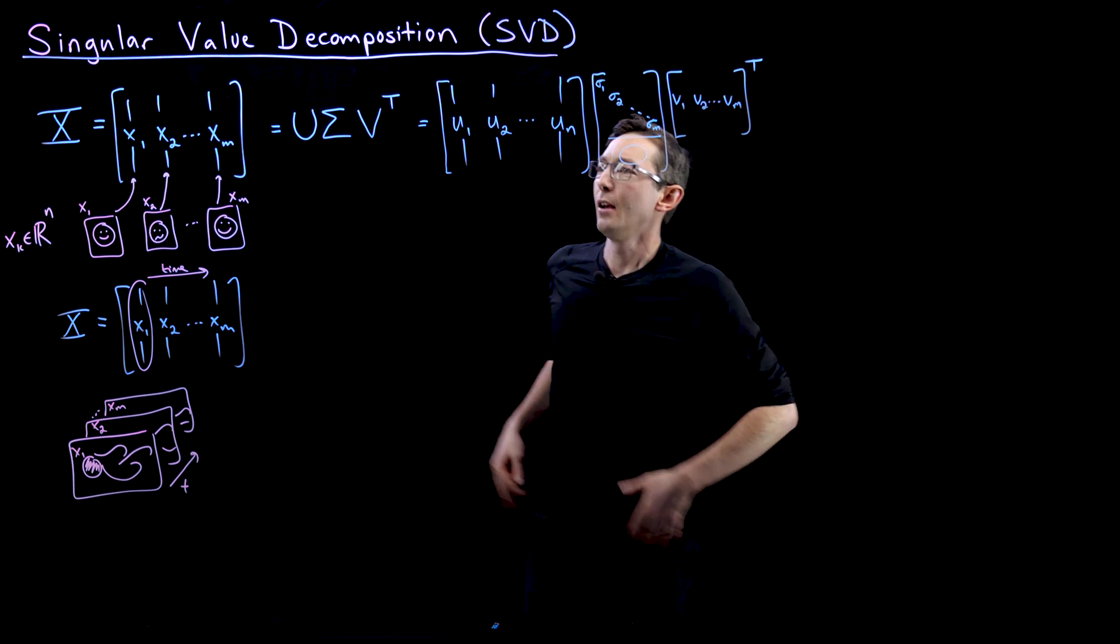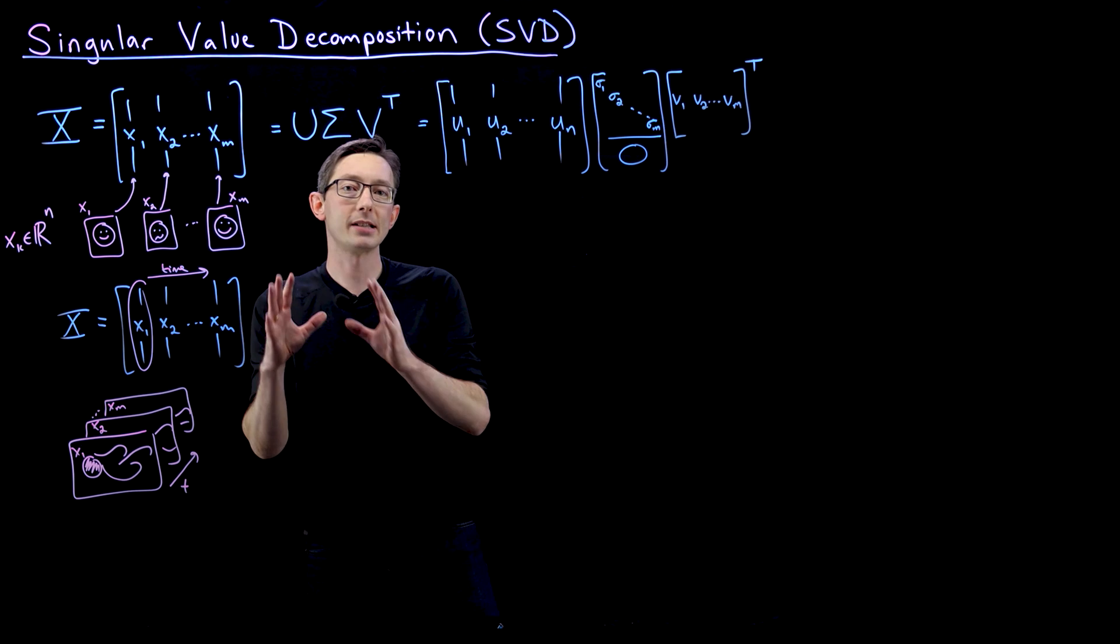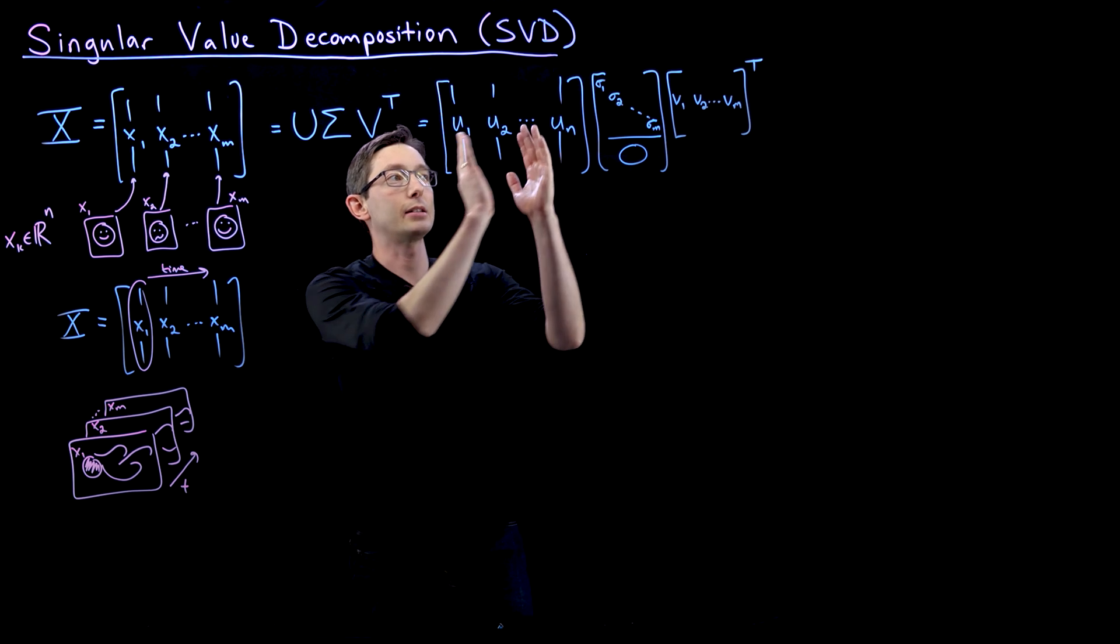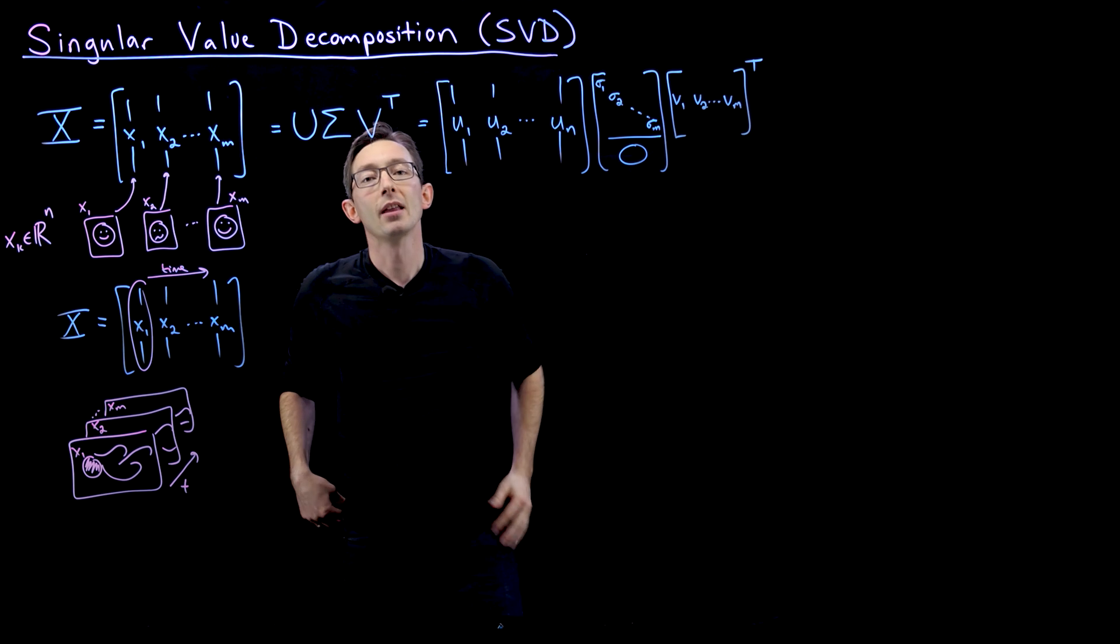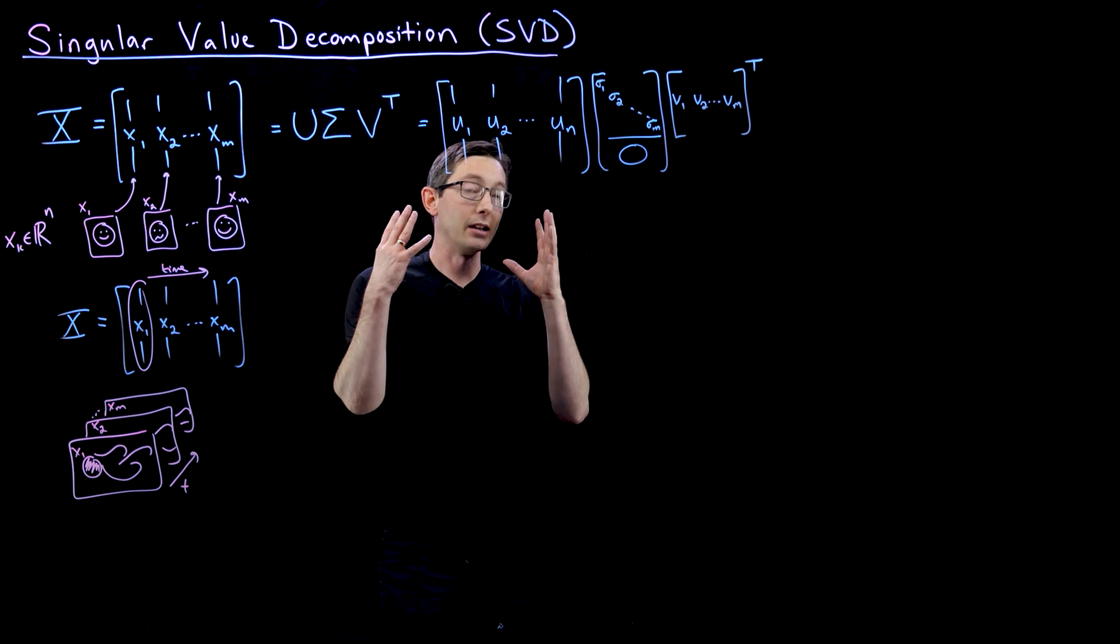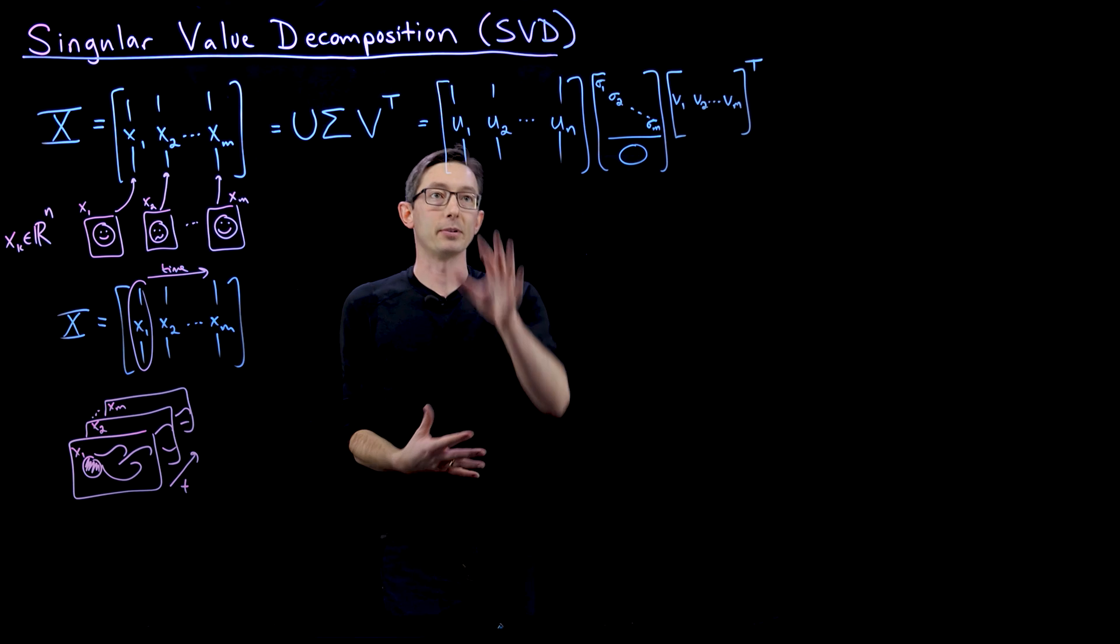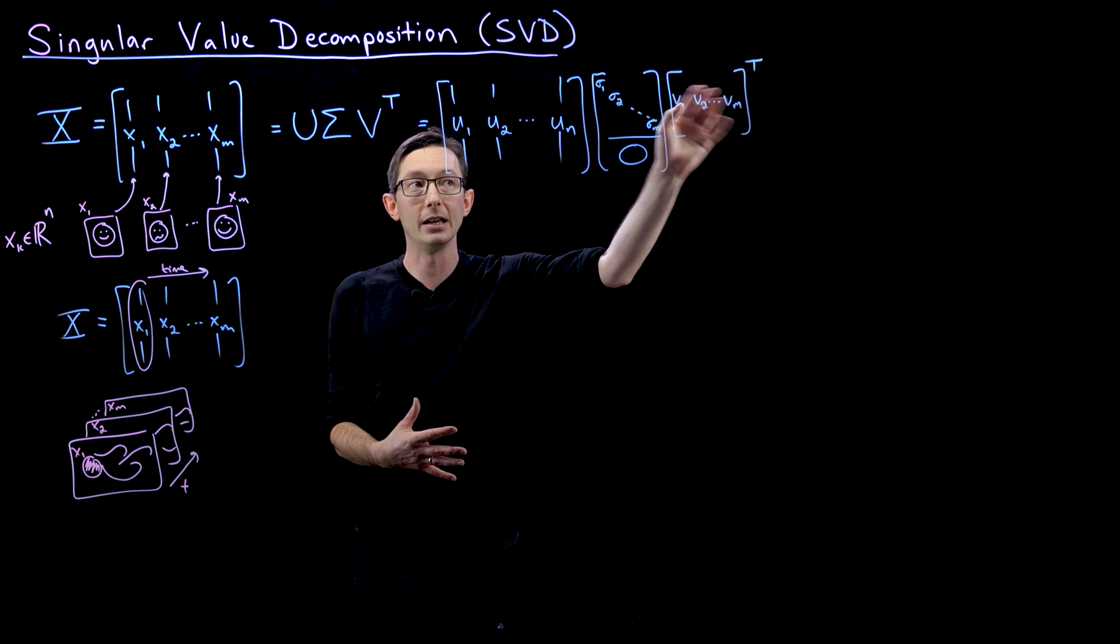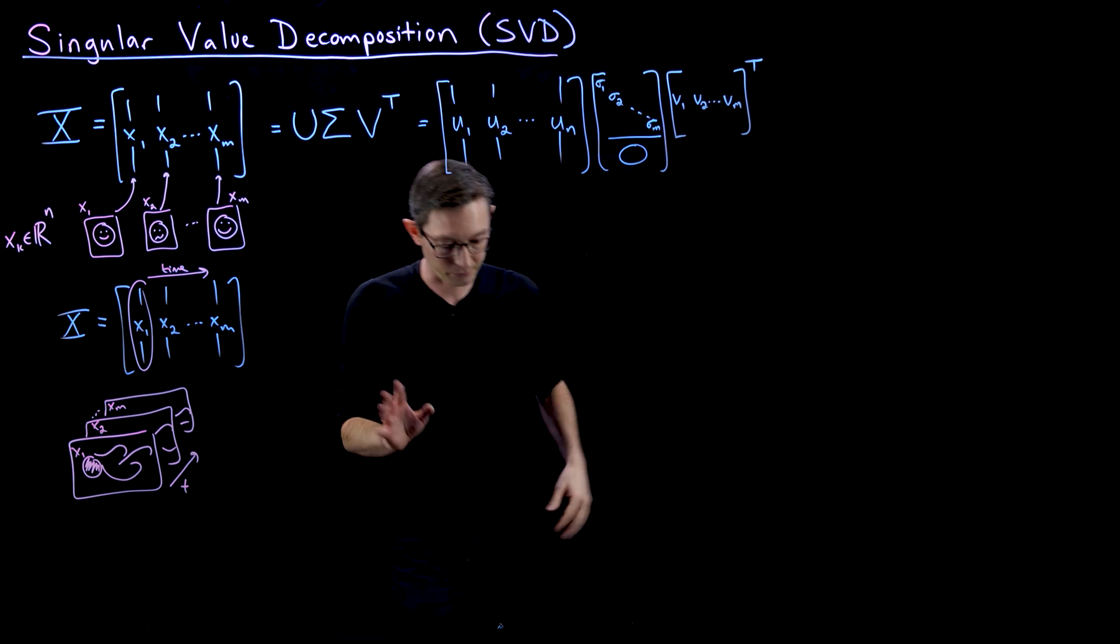So we're taking our data matrix X, and we're representing it as the product of U times sigma times V, where these each have very intuitive and physical interpretations of what these columns of U and V mean and what the entries of sigma mean.